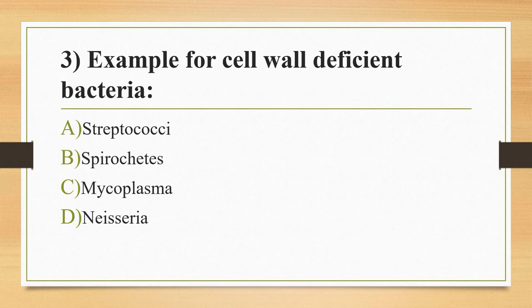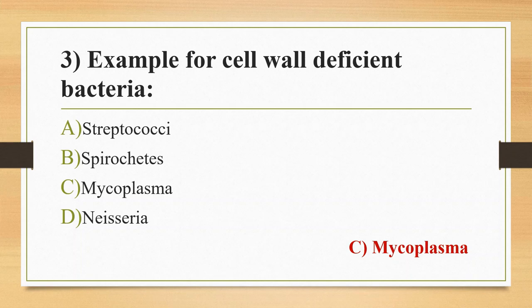Third question: Example of a cell wall deficient bacterium? Option A, Streptococcus; Option B, Spirochetes; Option C, Mycoplasma; Option D, Neisseria. The answer is Option C, Mycoplasma. Fried egg-shaped colonies are very important in the case of Mycoplasma. To observe Mycoplasma, Dienes stain is used, which differentiates between mycoplasma and bacterial L-forms.